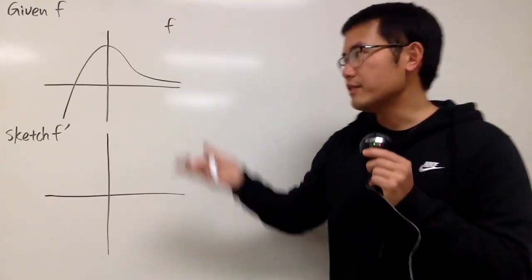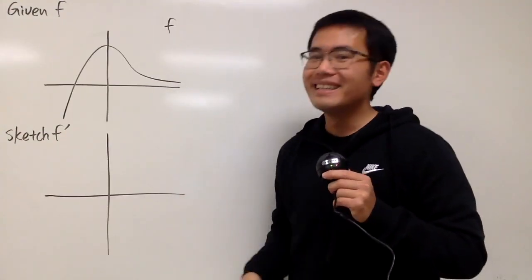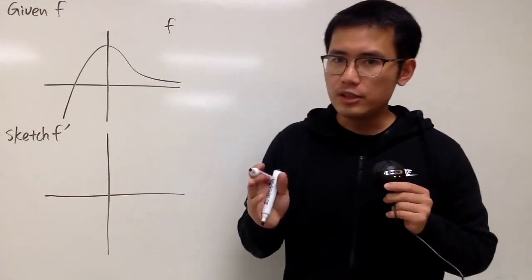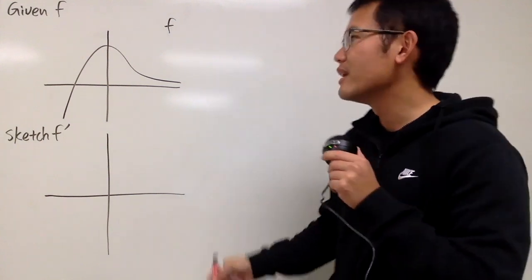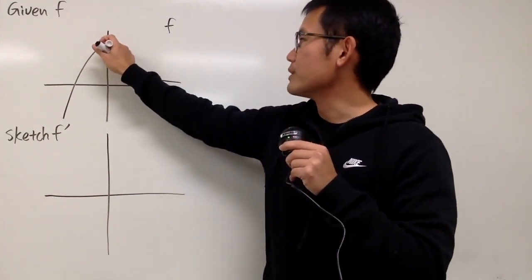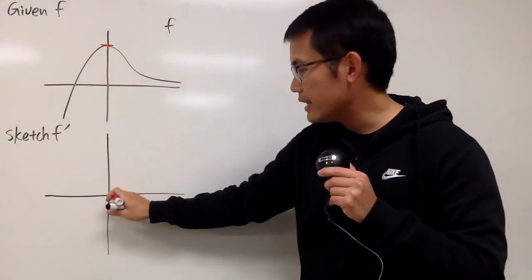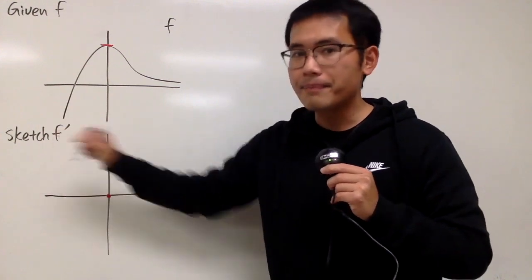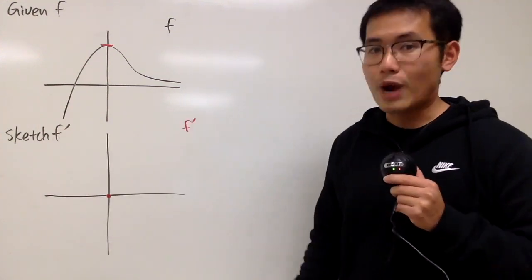Here we are given the graph of the original function f, and we'll try to sketch its derivative. We should be looking for the easy slope first — and of course, the easiest is when we have a horizontal tangent line. Right here we do have a horizontal tangent line, so that means I will have to go down and that will give me 0 for the f-prime. So this is going to be my f-prime graph.